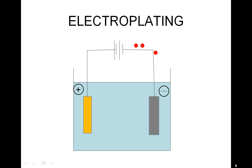The object to be plated is first connected to the negative terminal of the battery, which is called the cathode. A piece of gold is then connected to the positive terminal, or anode.